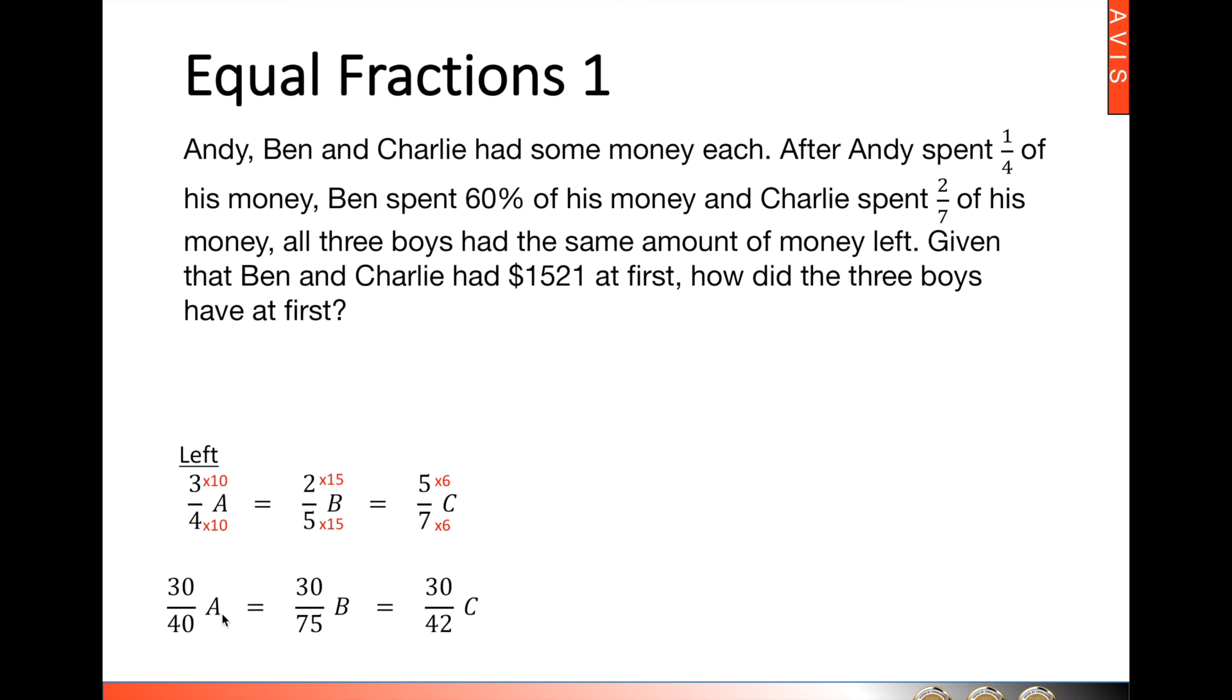What is interesting is that the denominator will actually tell us exactly how many units they have at first. Like in this case, Andy had forty units at first. Ben, seventy-five. And Charlie, forty-two. Using this information, we are going to proceed with the next part of the question.